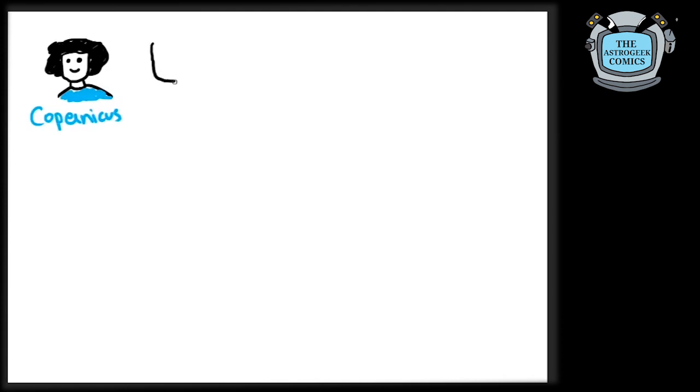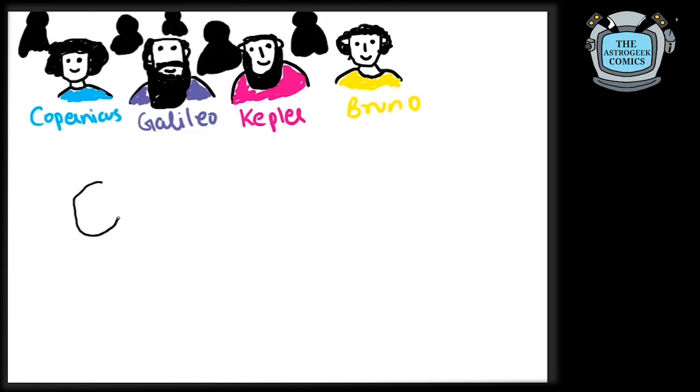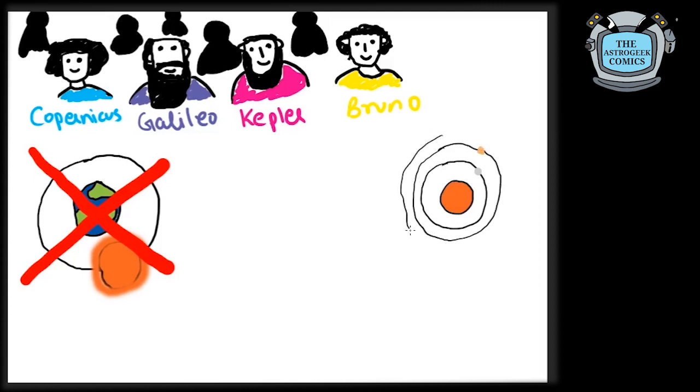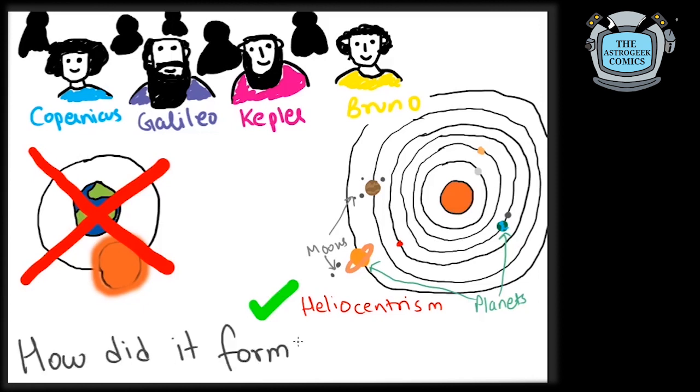It was through the efforts by astronomers like Copernicus, Galileo, Kepler, Bruno and many others that we understood that the Earth revolves around the Sun. And just like Earth, Jupiter, Saturn, Mars, Venus and Mercury are other planets going around the Sun. Some of these planets have their own moons. This brought up the question, how did the system, the solar system, form?